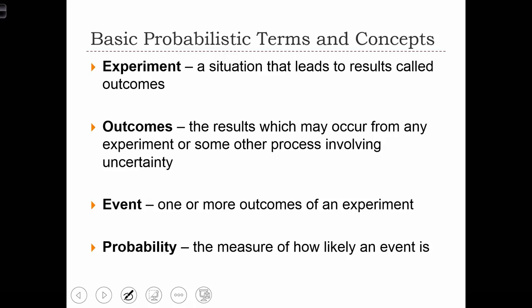An event is a collection of one or more outcomes from an experiment. And probability is defined as the measure of how likely an event is to occur.